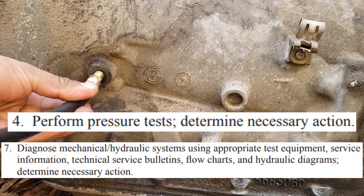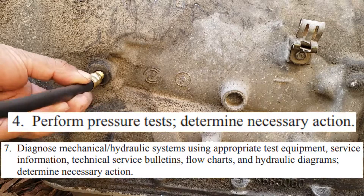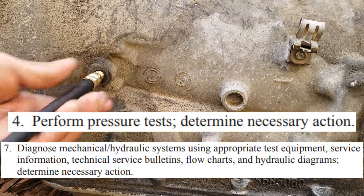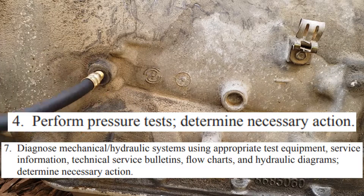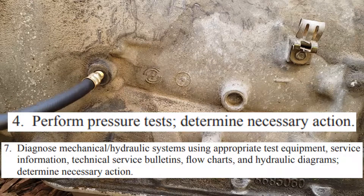You can check line pressure by connecting a pressure gauge to a pressure tap in the transmission housing, then following service information for your particular transmission.